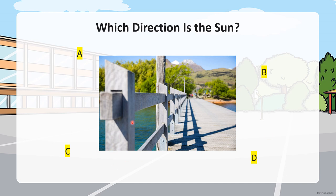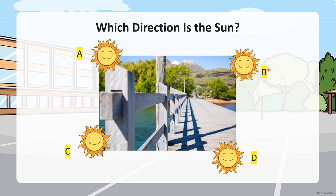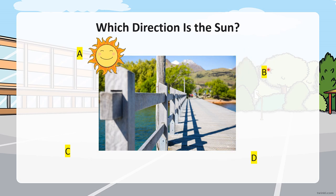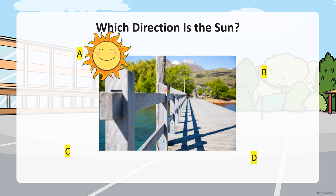Here is another example — this is an object and this is its shadow. Which direction is the sun? The sun must be on the opposite side to the shadow, so the correct position of the sun is at A — kedudukan yang bertentangan dengan objek.